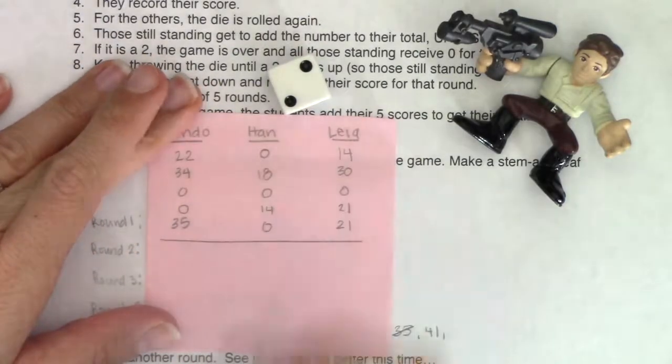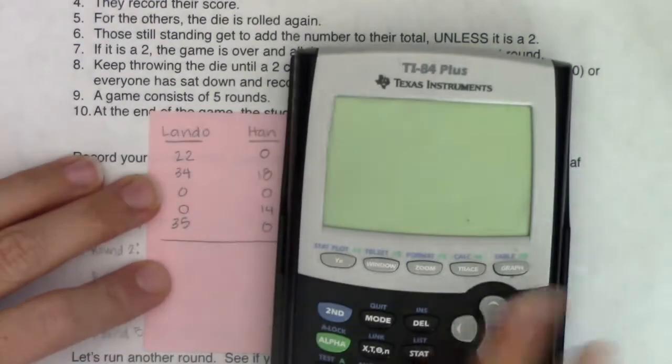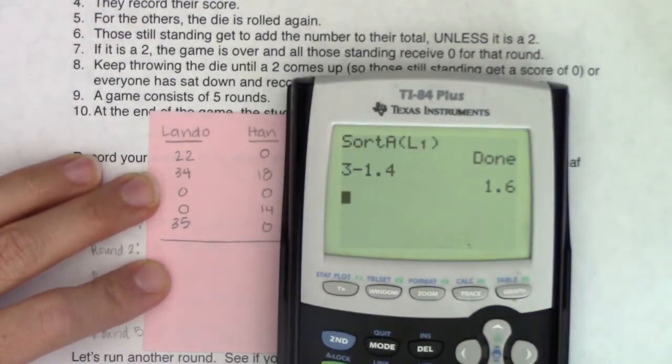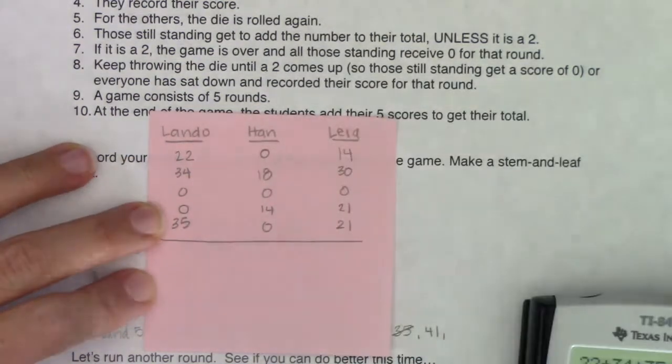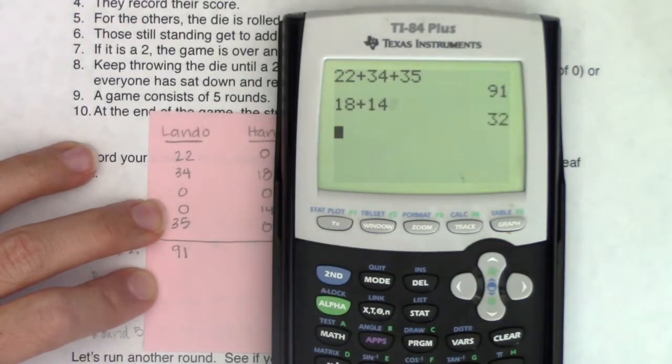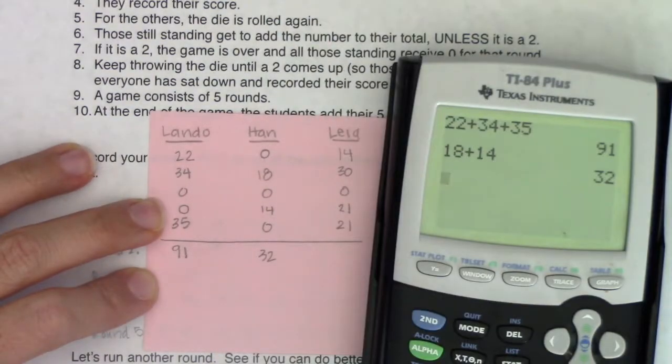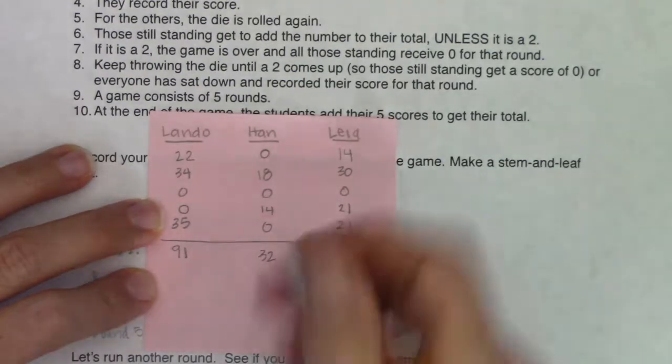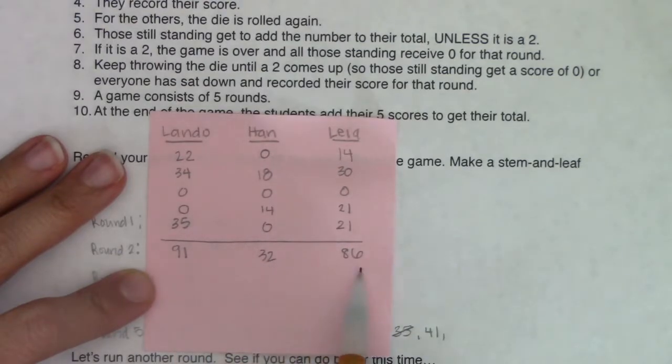All right. So let's see how everyone's doing and who wins this. So Lando had 22 plus 34 plus 35. So he came out with 91. Han didn't do so well. He came out with 32. He's a little too greedy. And Leia, what did she have? 14 plus 30 plus 21 plus 21. She had 86. So of the three folks that we simulated right here, we had 91, 32, and 86.